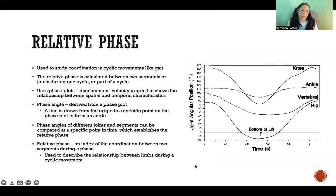Relative phase is used to study coordination in cyclic movement, like gait, for example. So relative phase is calculated between two segments or joints during one cycle or a part of a cycle. So like you could take the eight phases of walking gait, and you could look at any of those eight phases and try to determine what is the coordination pattern of the different joints or of the different segments during that phase.